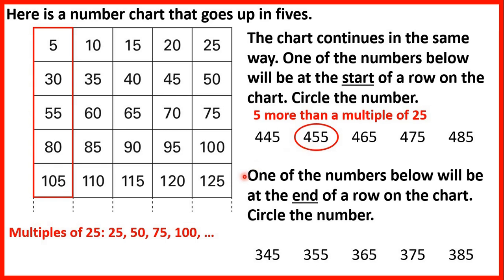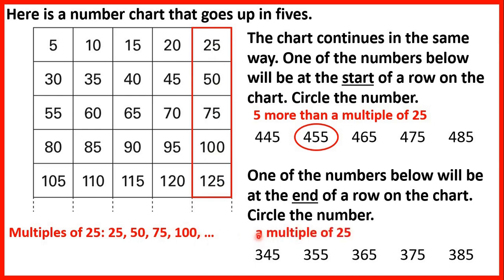Now one of the numbers below will be at the end of a row on the chart. Circle the number. If we look at the end of each row, we have 25, 50, 75, 100 and 25 — so we just have our 25 times table. So we're looking for a number that's a multiple of 25. That's 375, because if a number ends in 75, then we know that it must be a multiple of 25.